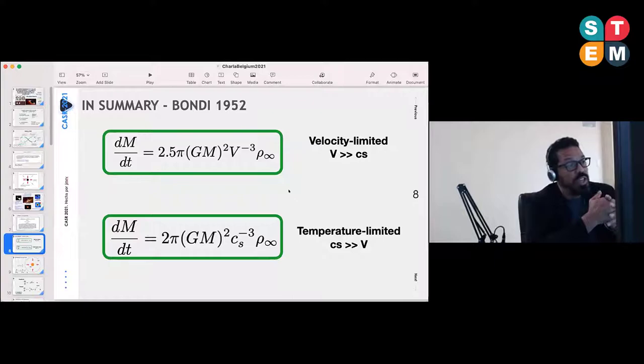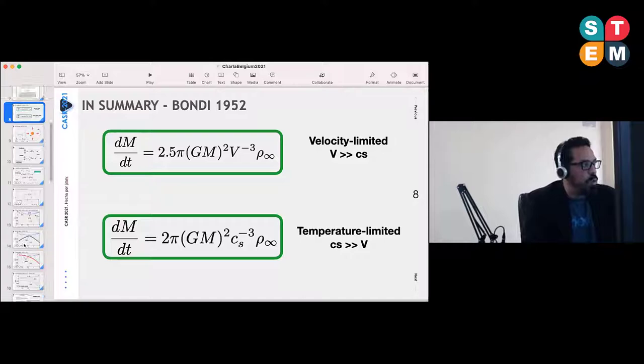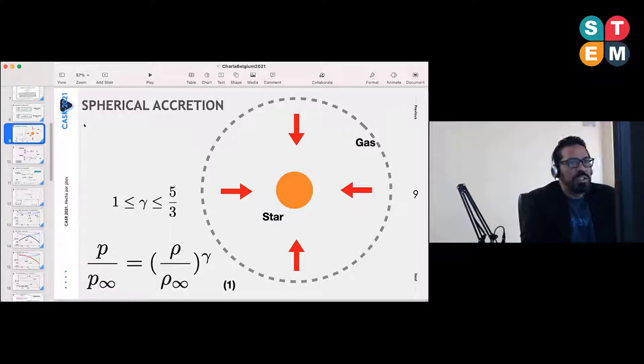One key quantity is the accretion rate, given by these two limits. In the case when the cloud star velocity is faster than the sound speed, then the dynamical quantities are the regulator of the system. On the other hand, if the sound speed is much higher than this cloud velocity, then the temperature is the main regulator of the accretion rate. This is one key quantity people are interested in studying.